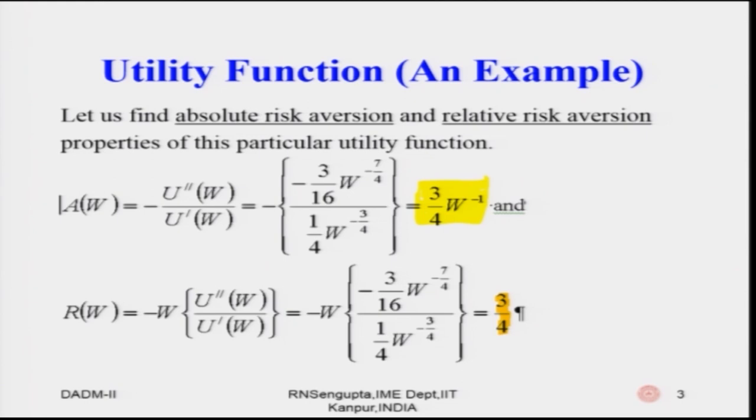So this function has constant relative risk aversion for R and decreasing absolute risk aversion for A. From this we can deduce what type of utility function it is. We are given A prime and R prime — whether greater than, equal to, or less than zero — and from that we try to deduce the type of utility function.